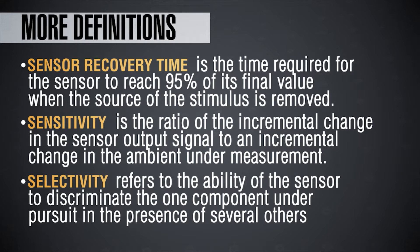Sensitivity is defined as the ratio of the incremental change in the sensor output signal to the incremental change in the ambient that you are measuring. Selectivity refers to the ability of the sensor to discriminate that one particular component that you are looking for, which is present among many others. Selectivity is a very important parameter because when you're trying to measure a particular gas or vapor in an ambient, the ambient has a huge variety of other things present. Your ability to pick out that one single thing you are looking for is called selectivity.